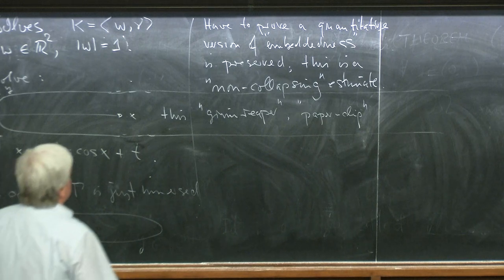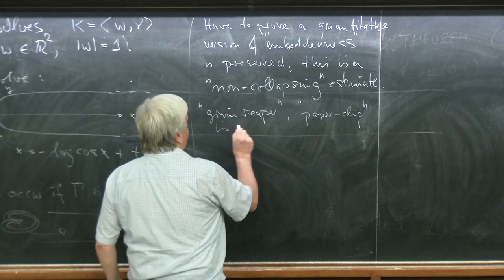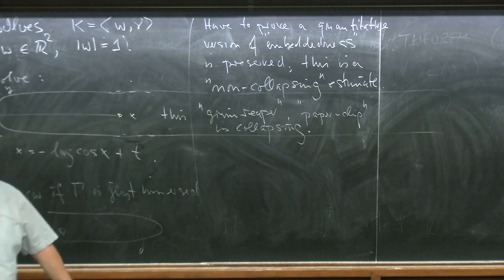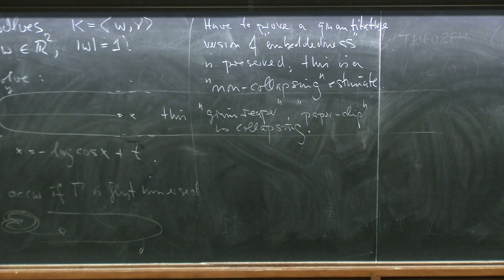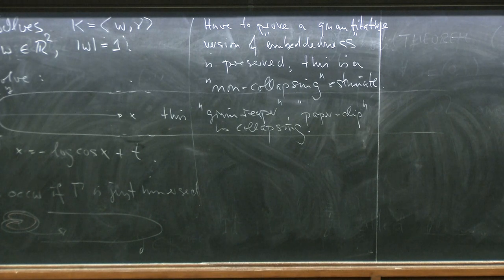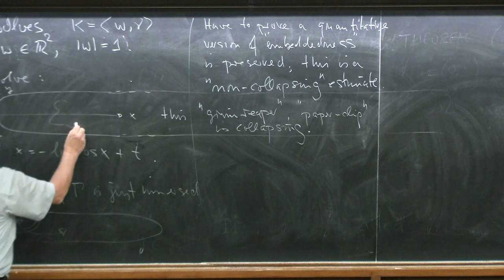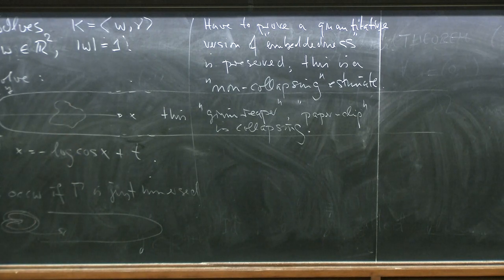The theoretical physicists have also studied this because it's related to quantum field theories, so they called it the paper clip — somehow different associations in different communities. Usually I have to explain why people call it the Grim Reaper: if some curve lives inside this region, it has to die before the thing passes through.